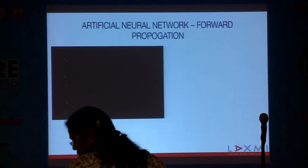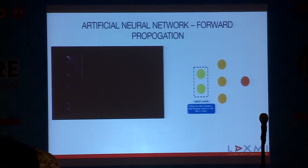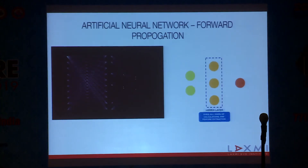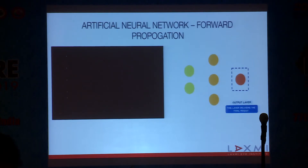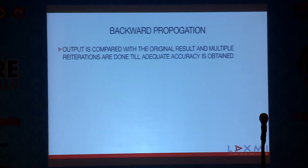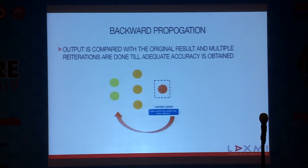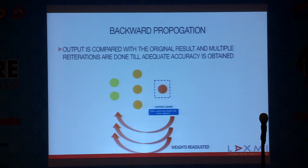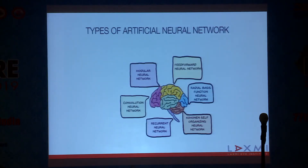An artificial neural network consists of three layers: an input layer where all data is entered, a hidden layer where mathematical calculations and feature extraction are performed, and an output layer where results are obtained. The output is compared with the original results, and multiple reiterations are done until adequate accuracy is achieved — with mathematical weights adjusted for each factor. Of the various types of artificial neural networks, the radial basis function is the one used for IOL power calculation.